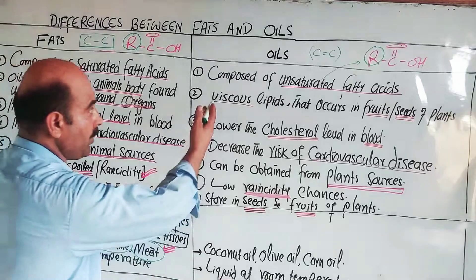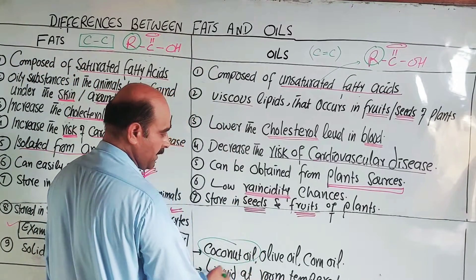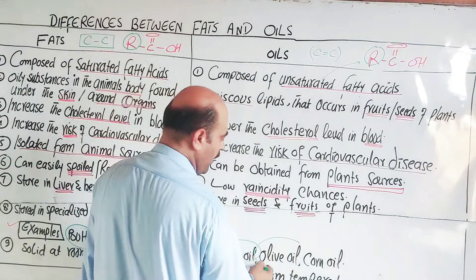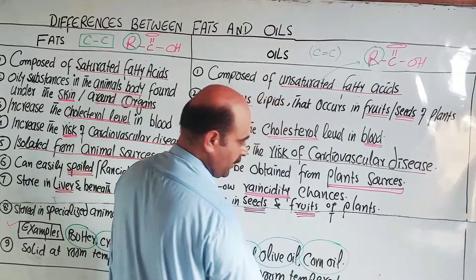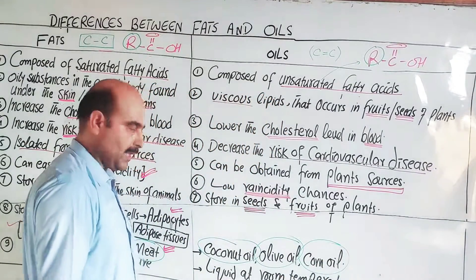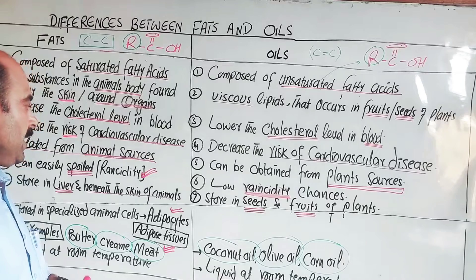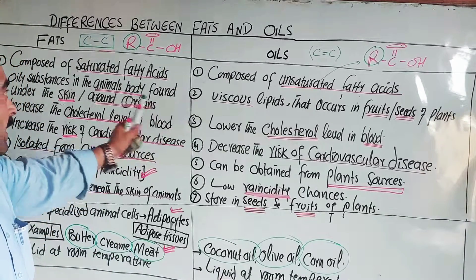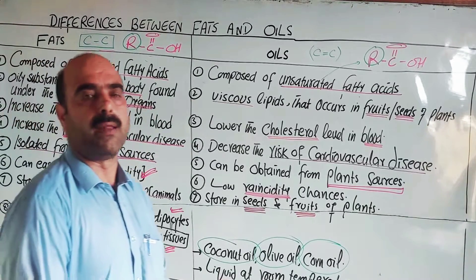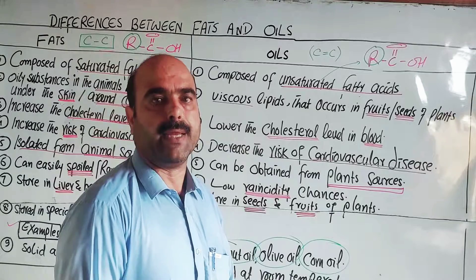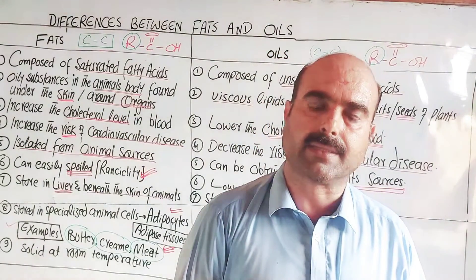Examples of oils include coconut oil, olive oil, and corn oil. These are all plant-derived oils. These are the main differences between fats and oils.